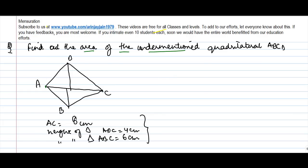Okay, let's take a problem on area of a quadrilateral. Find out the area of the undimensioned quadrilateral ABCD. You have a quadrilateral ABCD. What we see is that there is a diagonal AC, which is dividing this quadrilateral into two parts. The length of AC is given as 8 centimeters.